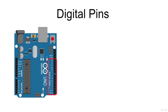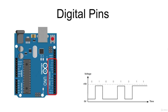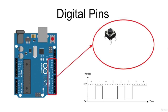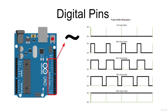The board has 14 digital pins that can be configured to work as digital input or digital output. Each pin can be used to read or write digital values. Digital signals can assume only two values, 0 or 1, corresponding to 0V and 5V. With these pins, it is possible to read the state of a button, turn on or off an LED, or drive a relay for controlling a motor. Digital pins labeled with the tilde symbol can also be used to generate PWM, which can be used for purposes such as fading the light intensity of an LED.